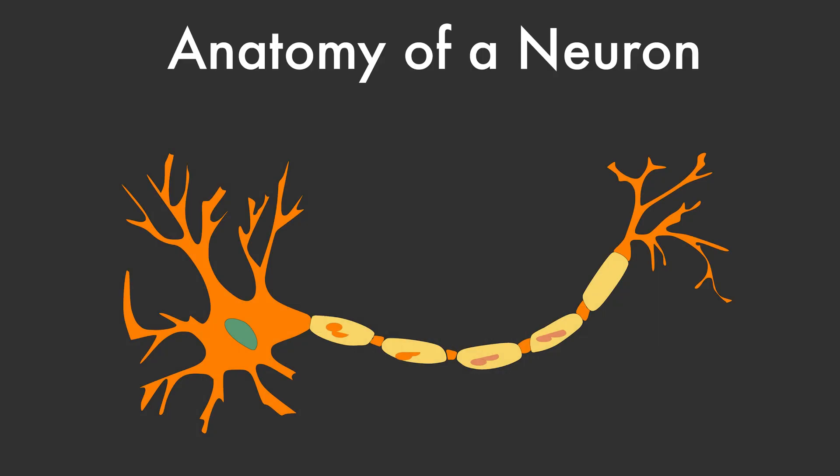Let's go back to the anatomy of a neuron. A neuron has a cell body, an axon as shown in this image, and then dendrites. This neuron is one of thousands and thousands of similar-like cells in your brain that all connect together to allow signals in the brain to go from one place to another, to allow you to go about your daily life.